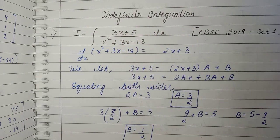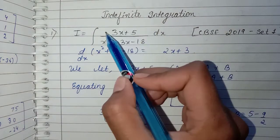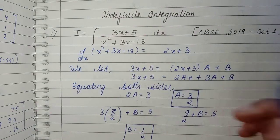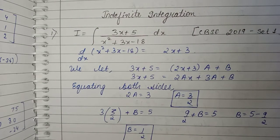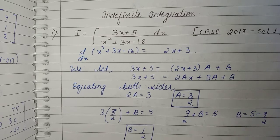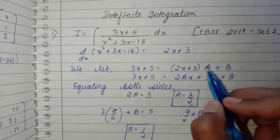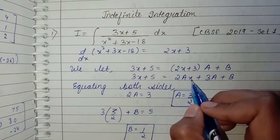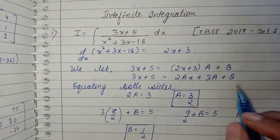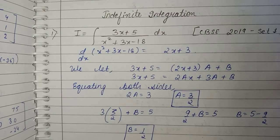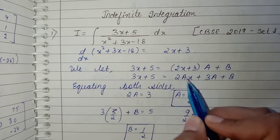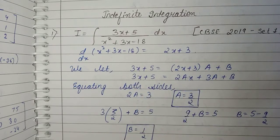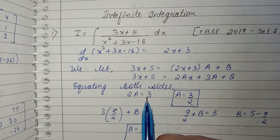Now we will change the numerator in the form of 2x+3, and we will change the denominator in the form of (2x+3)·a + b. Equating both sides, the x coefficient on the left is 2a and on the right is 3.